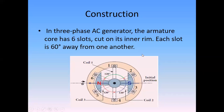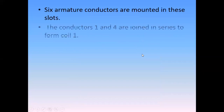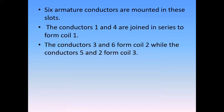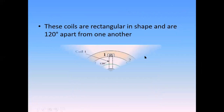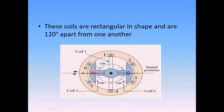Now the armature cores are mounted on these slots. Conductor one and four are joined in series — that is, one and four form an armature coil. Two and five form an armature coil, and three and six form an armature coil. The angle between the slots is 60 degrees, and the angle between the armature coils is 120 degrees.